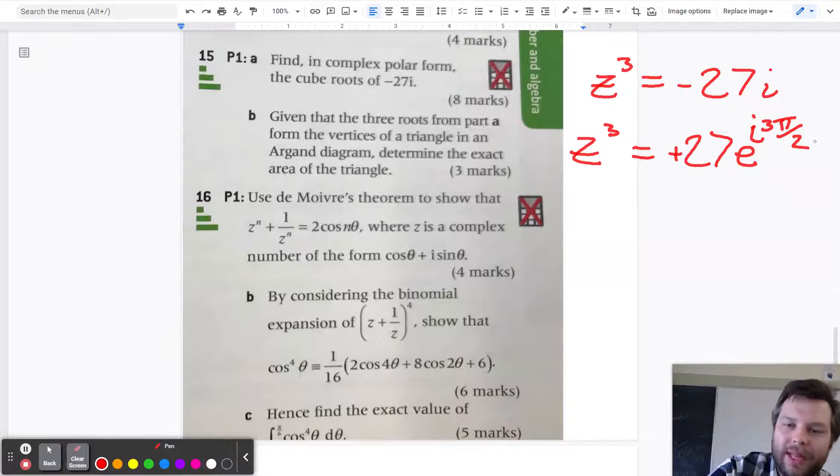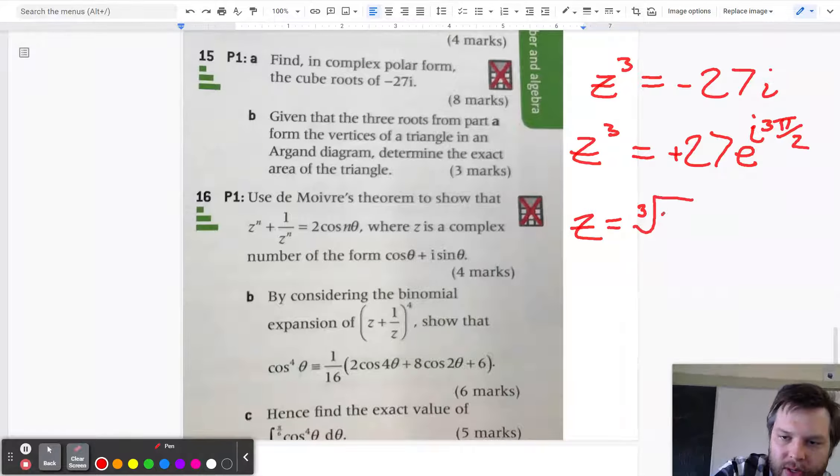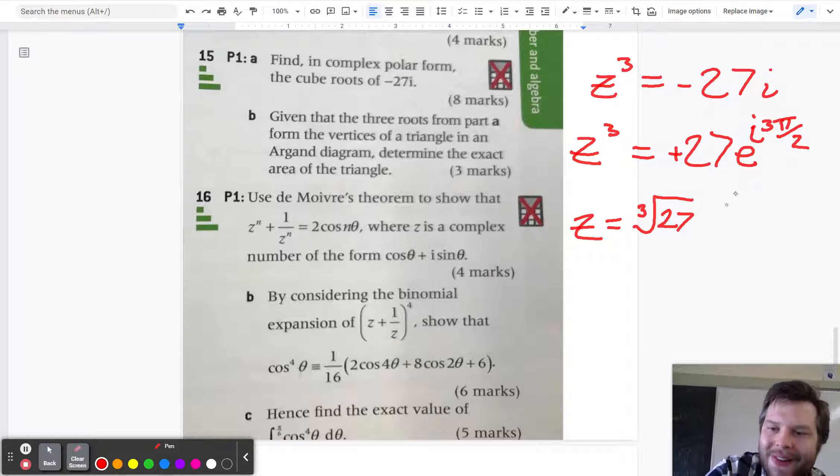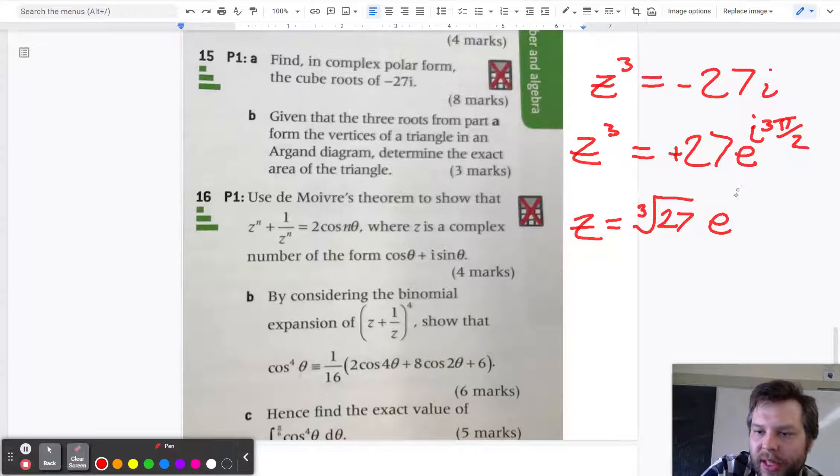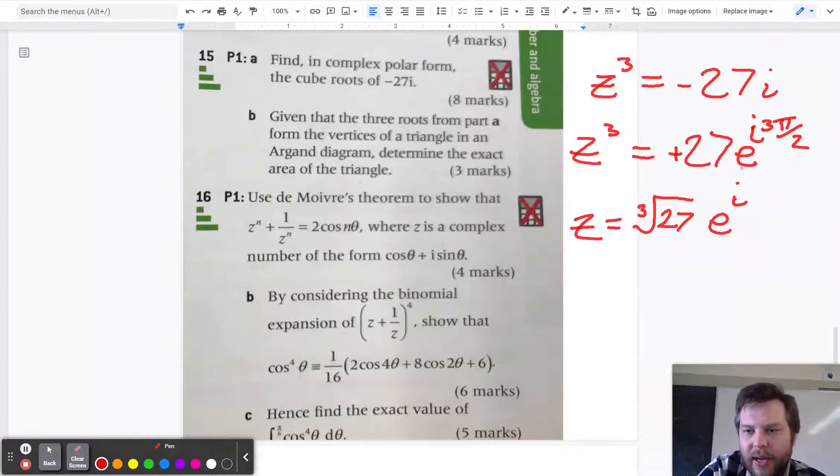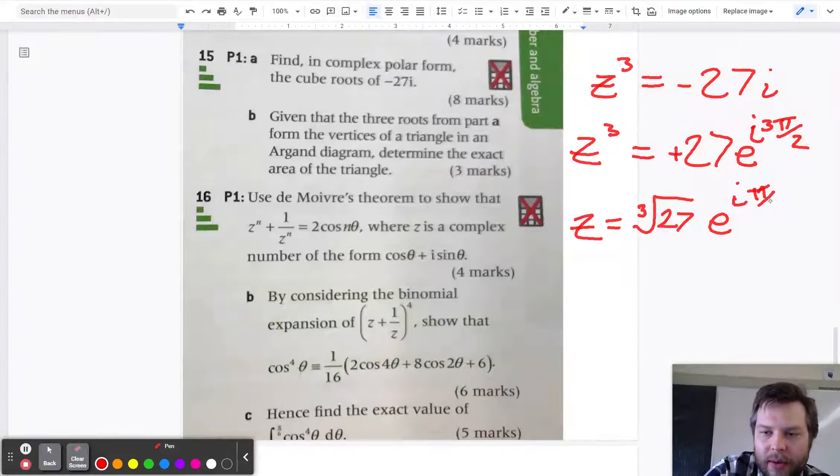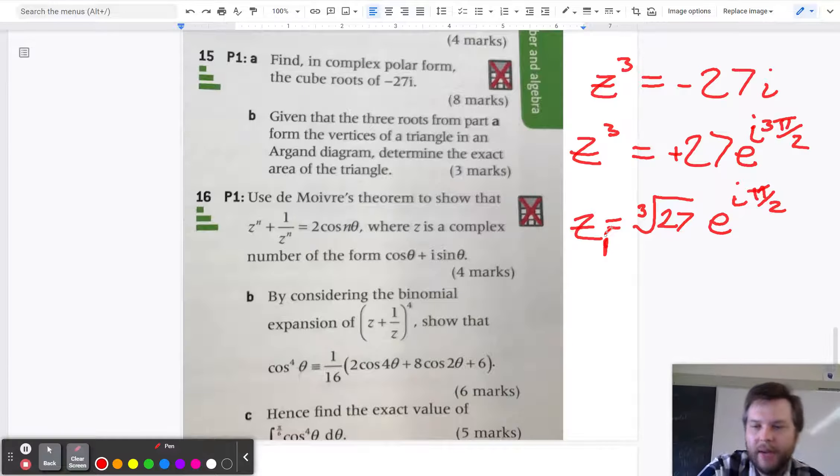And so then what that means is z is going to be the cube root of 27, and then e to the i. And what we need is an angle that when it gets multiplied by 3, lands on 3 pi over 2. So you're just dividing your angle by 3. Now this is only the first of the cube roots there, is that one.